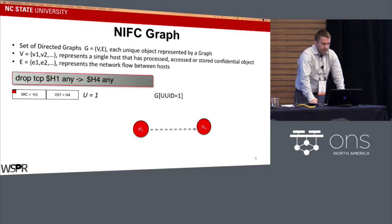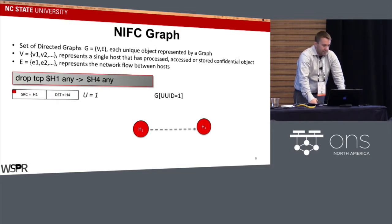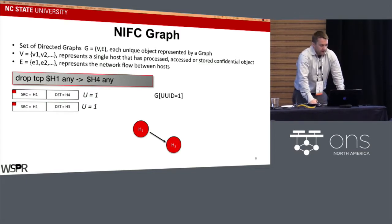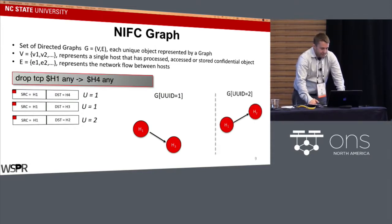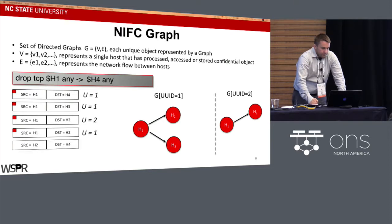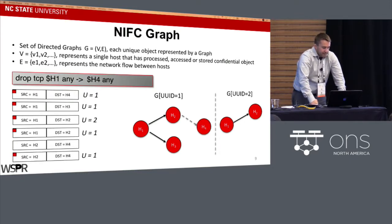For simplicity, assume the UUID is 1 — a graph is created for UUID 1. Because the packet never arrives at host 4, host 4 is not added to the graph. When a second packet bearing the same UUID arrives, a directed edge is added. When a packet bearing a separate UUID is delivered, a second graph is constructed. Packets with no confidential flag trigger no actions. Finally, a packet from host 2 to host 4 that creates a path from host 1 to host 4 is also dropped because that path violates the rule.